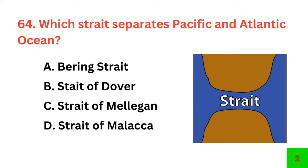The correct answer is option C: Strait of Magellan. The savannah finds its ideal conditions of growth in?